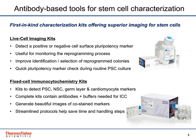I will be talking about two types of kits. First is for staining live cells, and the second is for staining fixed cells. Live cell imaging kits detect positive or negative cell surface pluripotency markers. They are useful for monitoring the reprogramming process and also improve the process of identification and selection of reprogrammed colonies. The kit is also helpful as a quick pluripotency marker check during routine pluripotent stem cell culture.